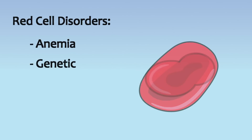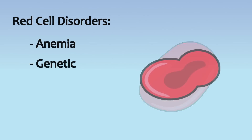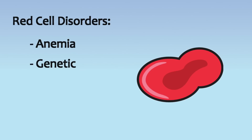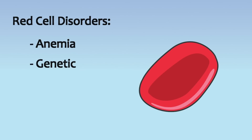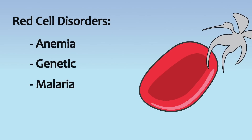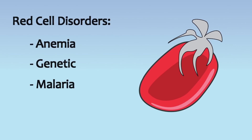Genetic disorders may also inhibit sufficient production of red cells. Some diseases, such as malaria, specifically target and destroy red blood cells.